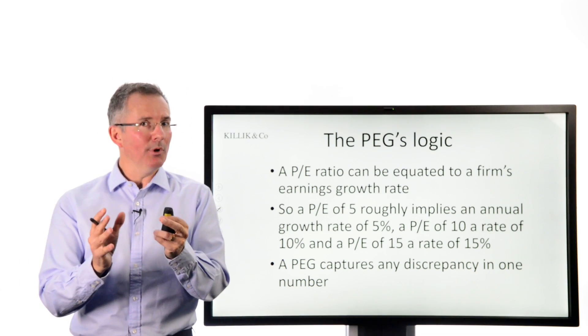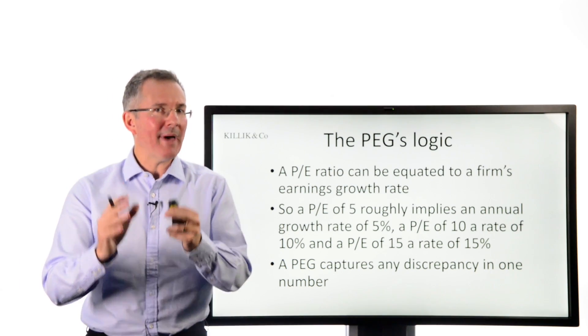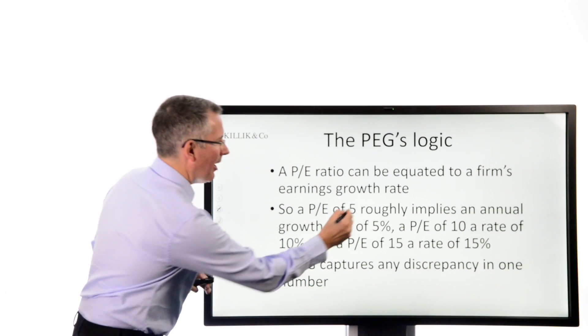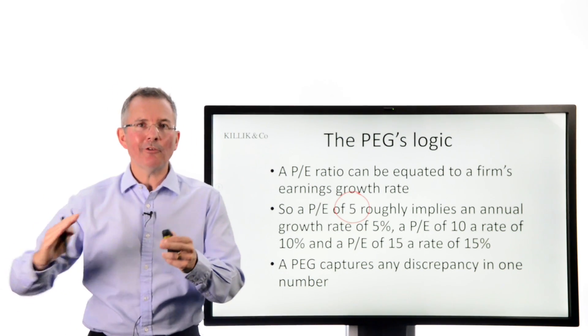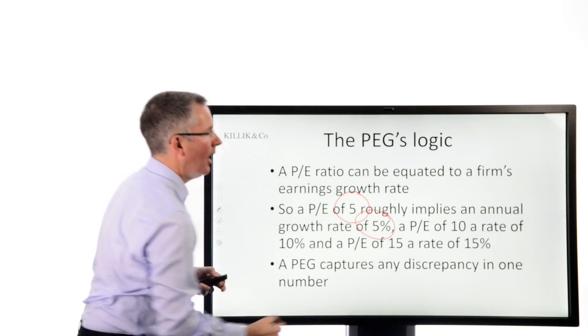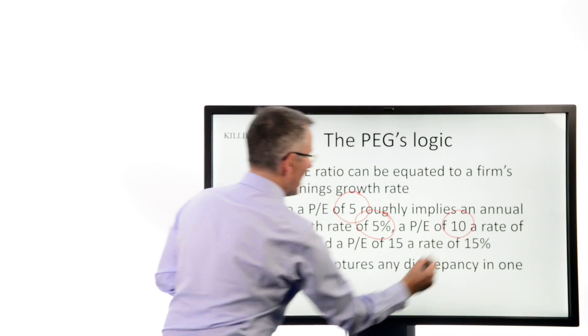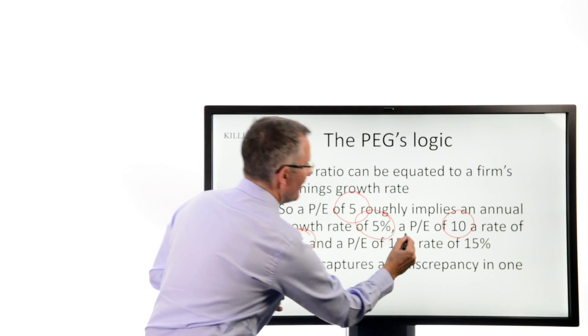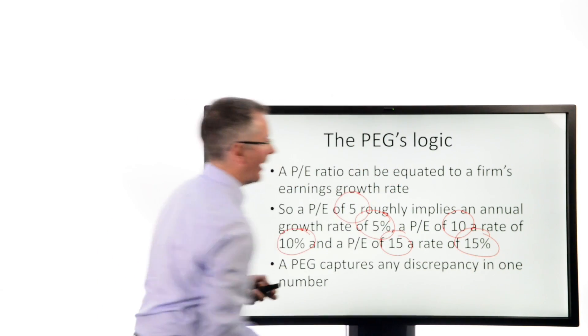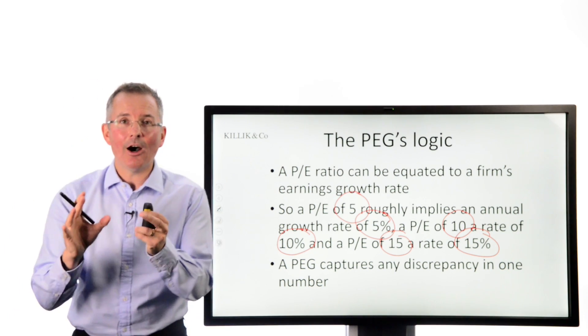Because the textbook, and people who are a fan of the PEG, says a PE of 5 implies a firm can grow earnings at around 5%. A PE of 10 suggests more like 10%. A PE of 15, a rate of 15%.